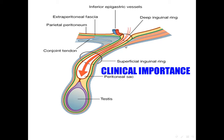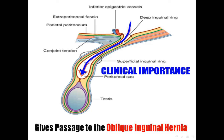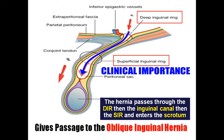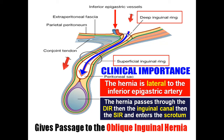Regarding the clinical importance of the inguinal canal: the oblique inguinal hernia passes through the deep inguinal ring, then through the inguinal canal, then through the superficial inguinal ring to enter the scrotum. The indirect inguinal hernia thus enters the scrotum. The landmark here is the inferior epigastric artery — the neck of the hernia is lateral to the inferior epigastric artery.